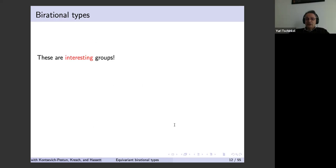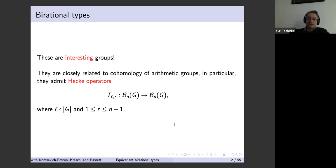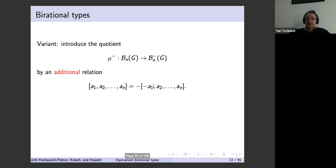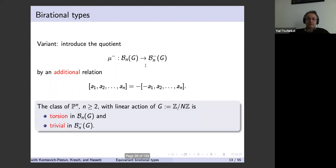These are very interesting groups. After further investigation, they turn out to be closely related to cohomology of arithmetic groups, in particular with Hecke operators. One can introduce a variant by pulling out signs, introducing an additional relation. Then for the linear action of a cyclic group on P^m, the corresponding class is torsion in B_n(G) and trivial in B_n^-(G).